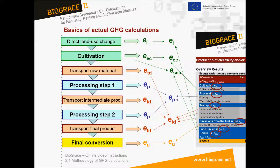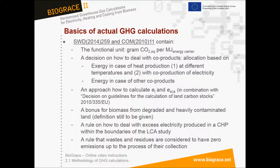Some important elements from the methodology as given in the Staff Working Document are listed on this sheet. Many of them, like the energy and exergy based allocation of co-products and the bonus for biomass from degraded and heavily contaminated land, have been heavily discussed amongst LCA experts and policy makers. Being defined as they are in the European Commission documents, they provide the basis for making actual greenhouse gas calculations. Nevertheless, there are more detailed issues that have not been defined, and therefore Biograze has developed a set of calculation rules that are the subject of a separate video instruction.